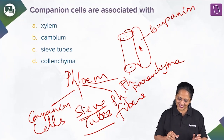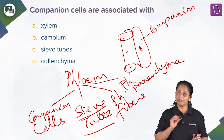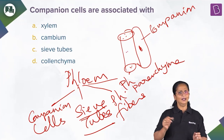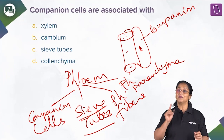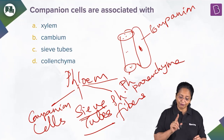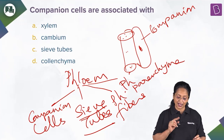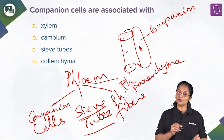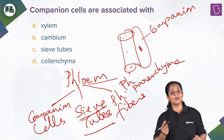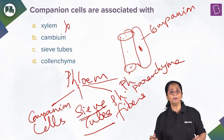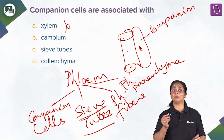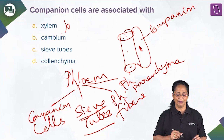The companion cell is called a companion because it's always with the sieve tube. So looking at the options: xylem is the water-conducting tissue — this is wrong. Cambium is a meristematic tissue, in fact an example of secondary meristem — this is also wrong.